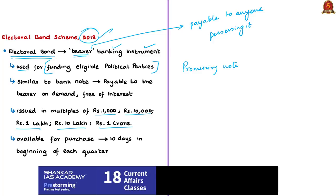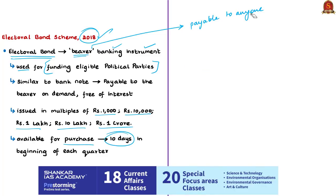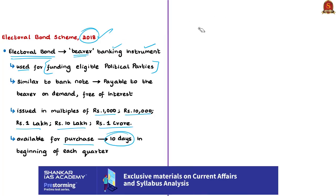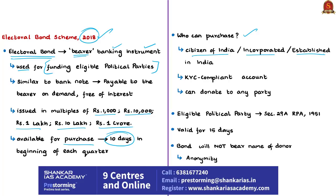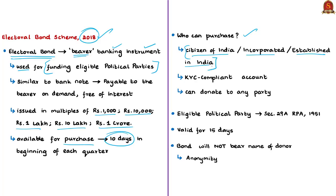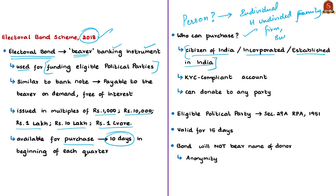The bonds will be available for purchase for a period of 10 days each in the beginning of every quarter — that is January, April, July and October — as specified by the central government. These bonds can be purchased by a person who is a citizen of India or incorporated or established in India. The definition of person includes an individual, Hindu undivided family, company, firm, association of persons, or any agency, office or branch controlled or owned by such person. The bond can be bought only if the donor has a KYC-compliant account, and an individual can also buy electoral bonds singly or jointly with other individuals.